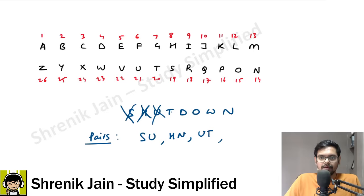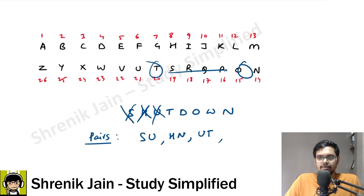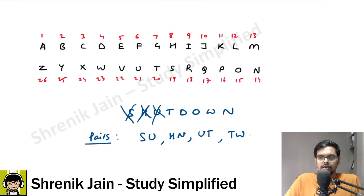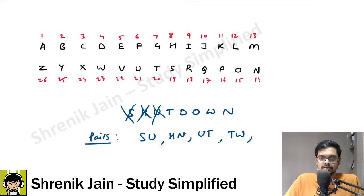Now with T, move forward. T-D: way apart — doesn't make sense. T-O: four elements in the word, but only one in the alphabet — no. T-W: two elements in between in the word, and two elements in the alphabet as well — T-W makes sense! So T-W is a valid pair. What about T-N? Three elements in the alphabet, but more than three in the word — doesn't make sense.